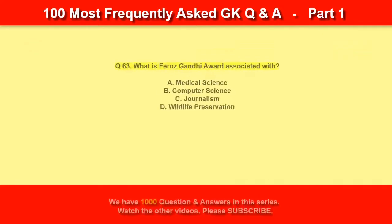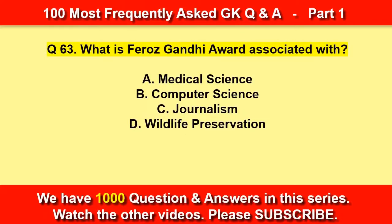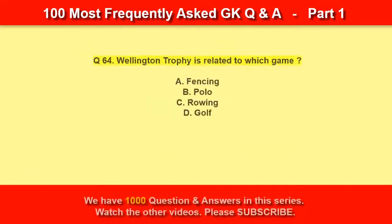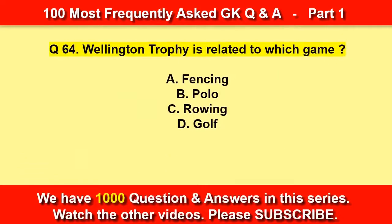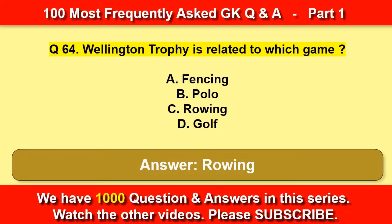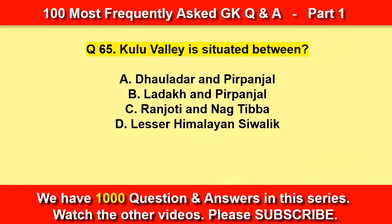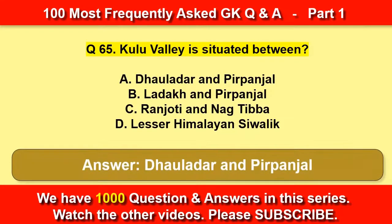What is the Firoz Gandhi Award associated with? Journalism. Wellington Trophy is related to which game? Rowing. Kulu Valley is situated between Dauladhar and Pirpanjal ranges.